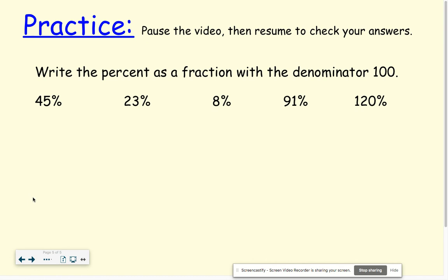All right, let's check your answers. If we have 45% and we're changing it to a fraction, we're going to get 45 out of 100. 23% means we have 23 out of 100.